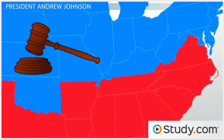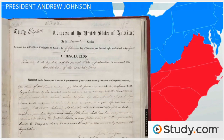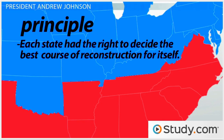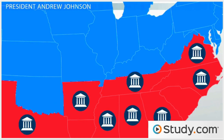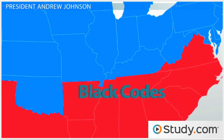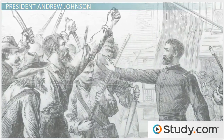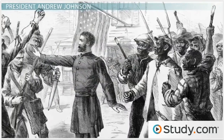But Johnson did not intend to punish the South, and while he did oversee the ratification of the 13th Amendment to the Constitution outlawing slavery — a process Lincoln had started — Johnson also believed on principle that each state had the right to decide the best course of Reconstruction for itself. He appointed governors to help the states take the steps outlined by Lincoln for readmission to the Union, but many of them proved to be too lenient, and as a result, Black codes quickly spread throughout the South, attempting to restrict the rights of African Americans at the state and local levels. Johnson's paternalistic attitude toward the freedmen kept him from opposing these measures with presidential authority.